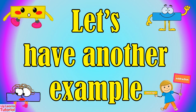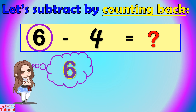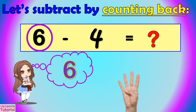Let's have another example. Let's subtract 6 minus 4. First, put the minuend or the bigger number in your head — that is 6. The subtrahend on your fingers — that is 4. Then count back from 6: 6, 5, 4, 3, 2. The answer is 2.